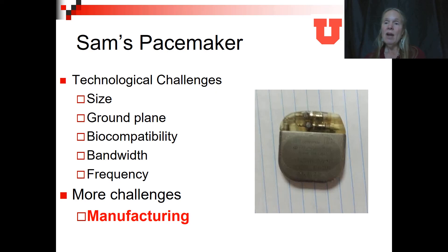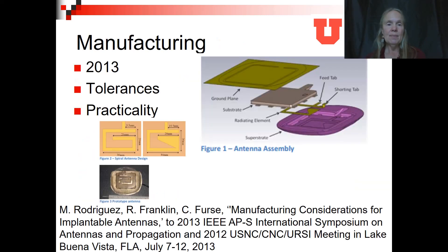Going back to Sam's pacemaker: after designing a number of these antennas, one serious problem limiting practical implementation was manufacturability. The challenge was taking materials that would not allow any biological fluid to enter them and trying to glue those onto titanium, which also resists being glued to. It was very difficult to keep these glued long-term without fluid seeping into the cracks. So in 2013, we worked out a different — backwards — design. The superstrate was first molded with a cavity into which the titanium antenna was placed, cut from titanium material like tinfoil. Then the pacemaker body was placed over that and the ground plane on top. This made a much more manufacturable design that could hold together with tabs instead of relying solely on glue.